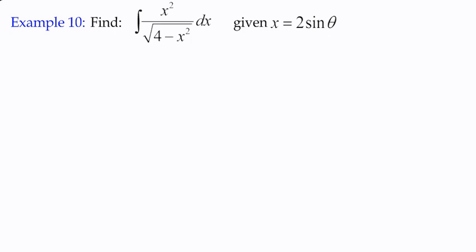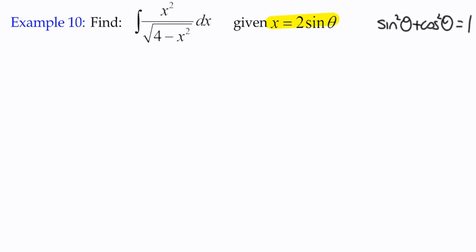We've got the integral of x² over the square root of 4 minus x² with respect to x, and we're told to use the substitution x = 2sinθ. The reason for introducing a trig term when there isn't one is that we're going to end up using trig identities. The key one is sine²θ + cos²θ = 1 — that's the fundamental identity we would use in this kind of situation.